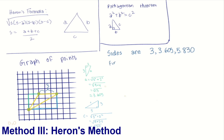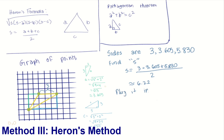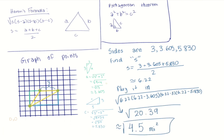Next, we're going to find S to use Heron's formula. S is the sum of all of the sides divided by 2, which comes out to be 6.22. Now we plug it into the formula, and we can simplify it to get the square root of 20.39, which is around 4.5 miles squared.